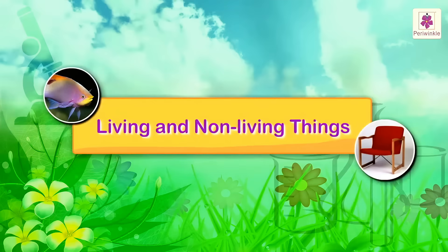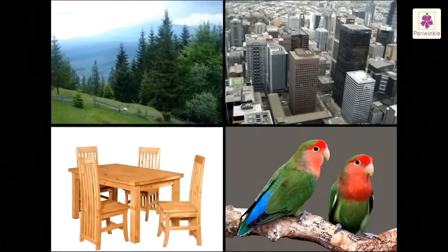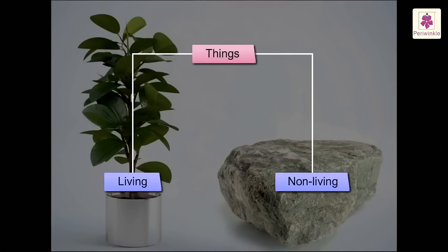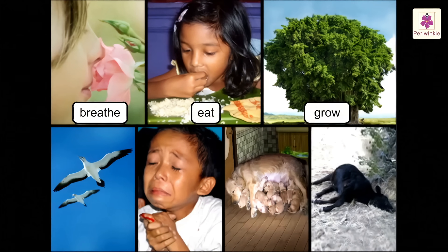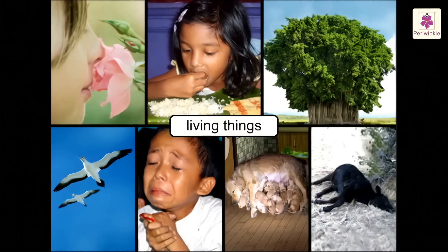Living and Non-living Things. All things which are present in this world can be classified into living and non-living things. Things that can breathe, eat, grow, move from one place to another, have feelings, produce their young ones and die are called living things.